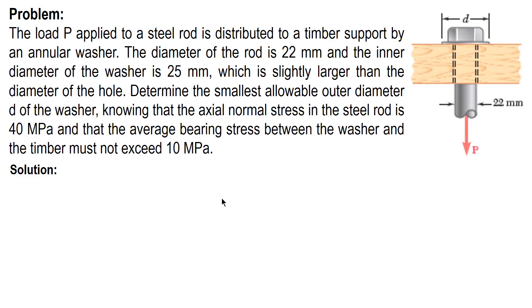Let's start. Let's solve for P, let's consider the steel rod. Normal stress of the rod equals P over area of the rod, and the diameter of the rod is 22 millimeters. So 40 megapascals or newtons per millimeter squared equals P over pi over 4 diameter of the rod squared. And so we have P equal to 15,205.31 newtons.